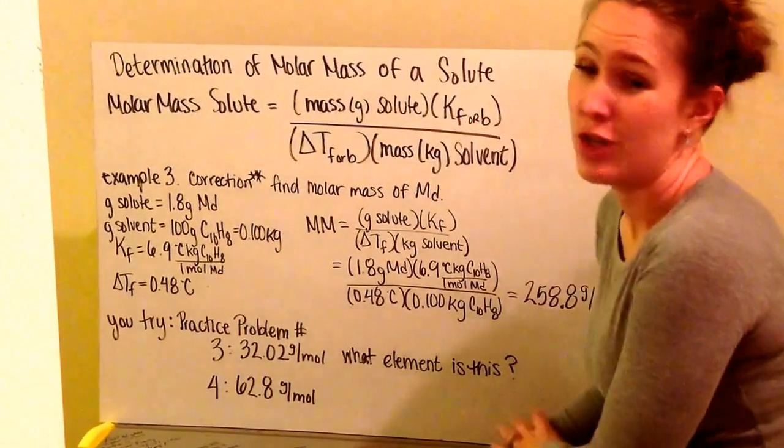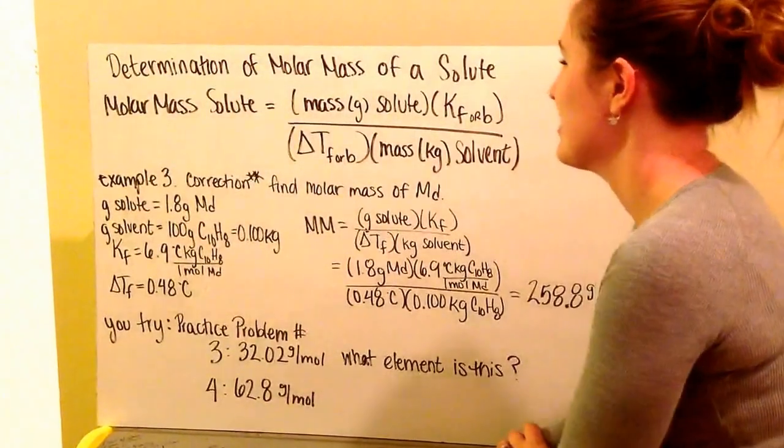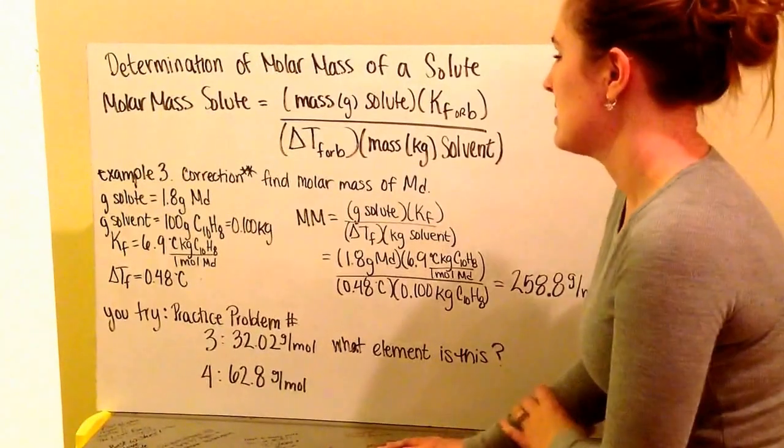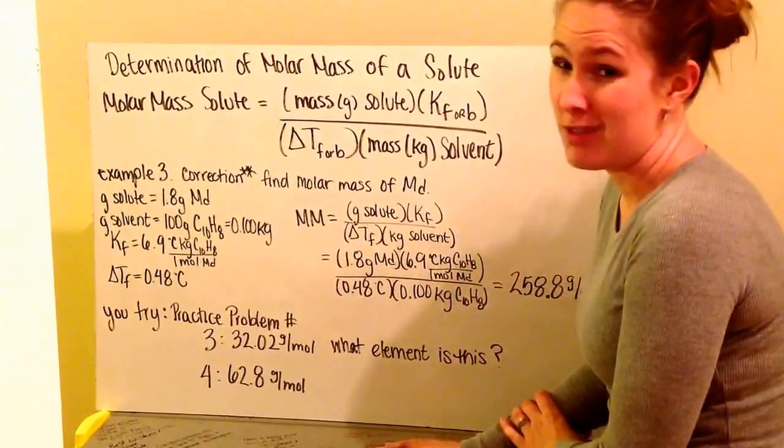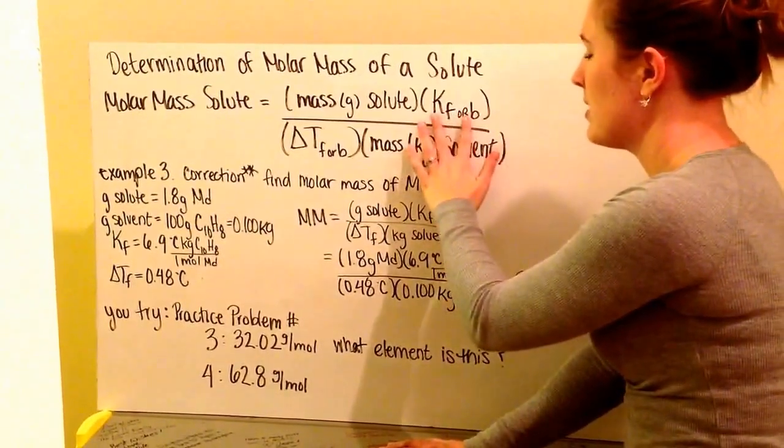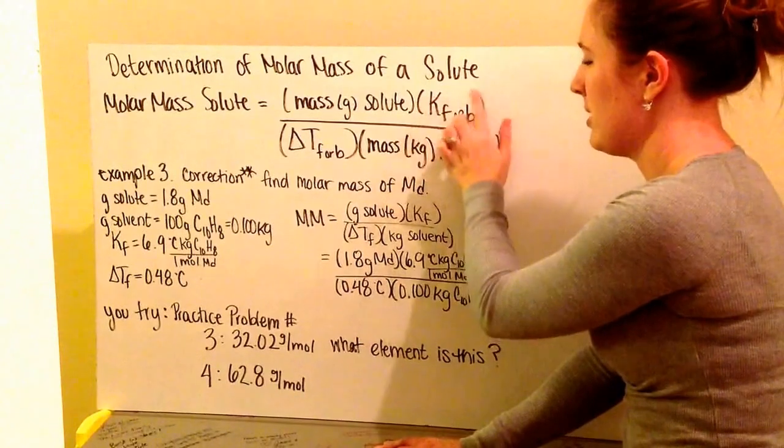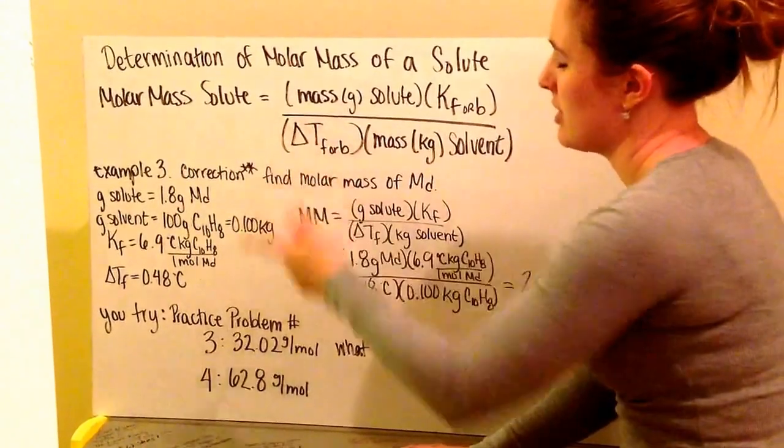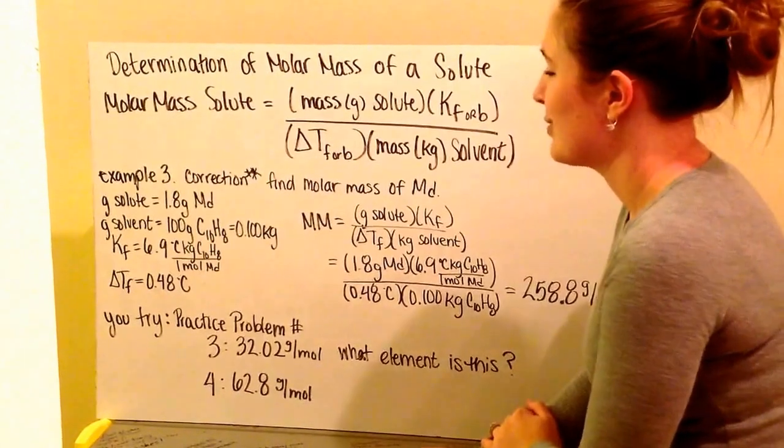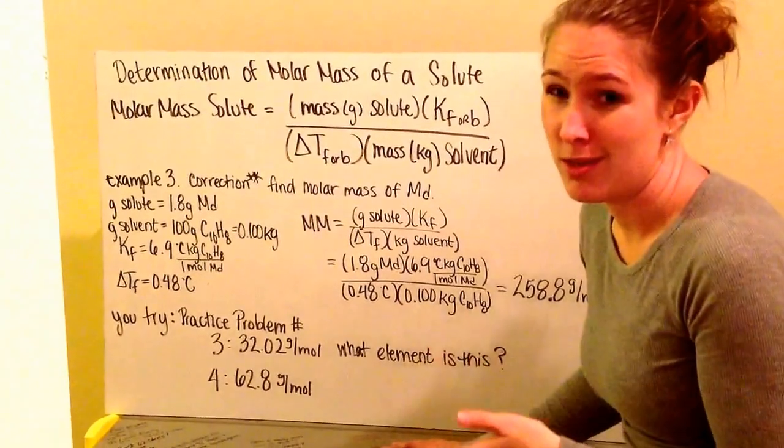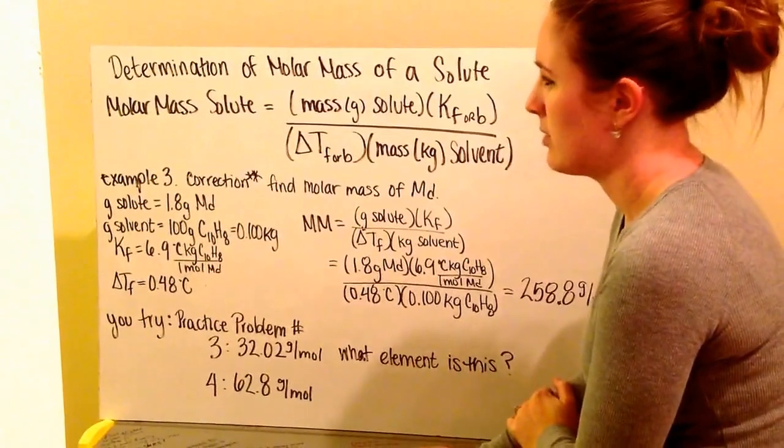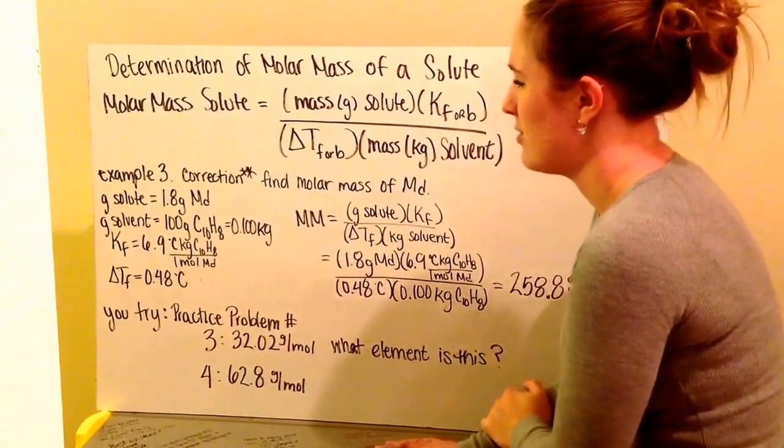This video is about the determination of molar mass of a solute based on the colligative properties we've talked about previously. We use our colligative property constant for freezing or boiling and our change in temperature because of adding that solute to the solvent, which impacts either increasing or decreasing the melting point, boiling point, or freezing point of your solution.